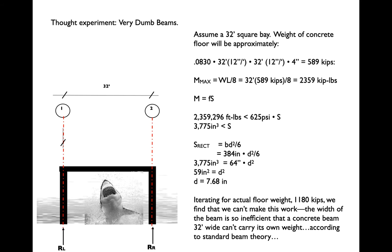So as a real quick thought experiment, if we take, say, a 32-foot square bay and we assume that we want to build it out of a four-inch deep concrete slab, which is a pretty standard flat slab dimension, we can go through and we can calculate this exactly as we would a beam. We can use WL over 8. We can take the total dead load. We know the weight of the concrete, 0.830 pounds per cubic inch. We end up with about 589,000 pounds for a 32-foot square bay. And if we take that as our load and do our WL over 8 calculation, and then using the maximum moments, almost 2,400 kip pounds, if we back out a section modulus from that, we get a pretty big required section modulus, right?